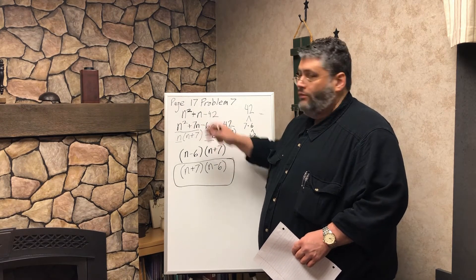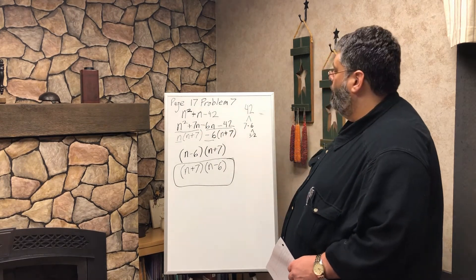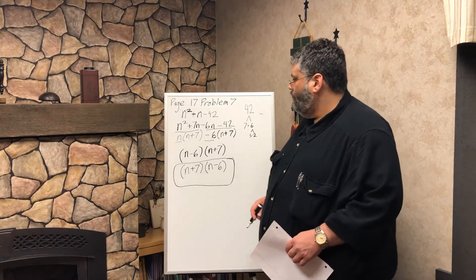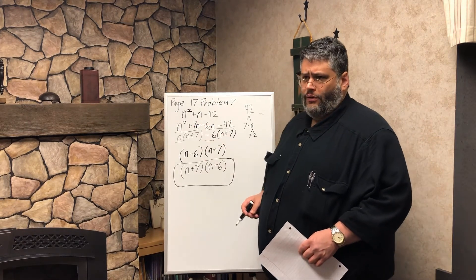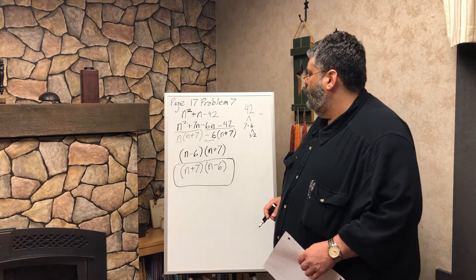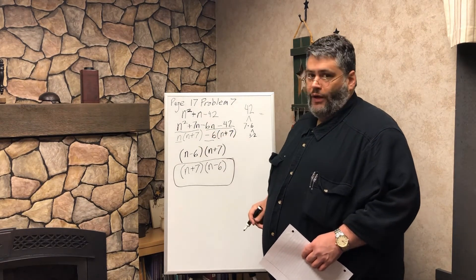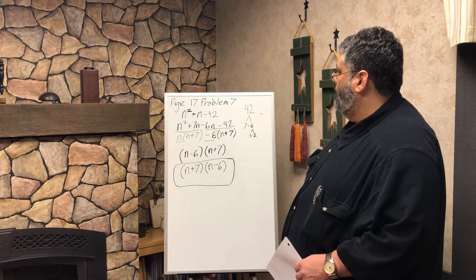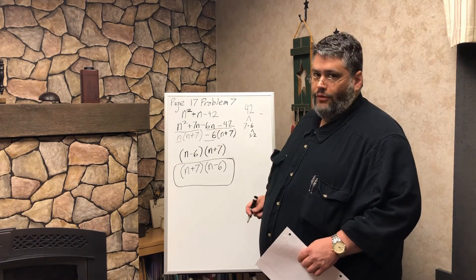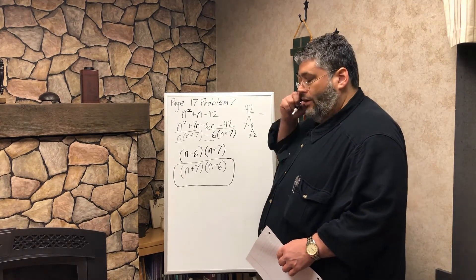So 7n minus 6n is 1n, and that's an important key here to note, and we see that this helps us a lot being able to factor that 42 into prime factors.